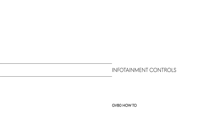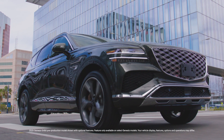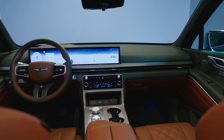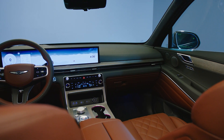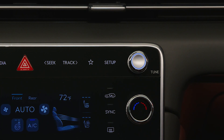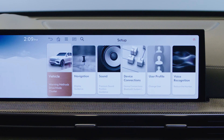This is the Genesis GV80. Your Genesis comes equipped with a number of convenience and assistance systems, all of which can be customized through the center infotainment screen. To begin, press the Setup button, located just above the climate controls, and then select Vehicle on the infotainment screen.